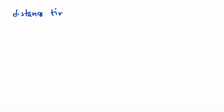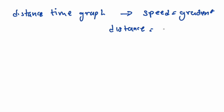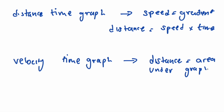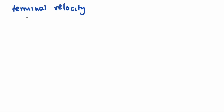To find the speed in the distance-time graph, look at the gradient, and to find the distance, do speed times time. For the velocity-time graph, to find the distance, it is the area under the graph.